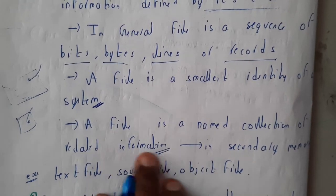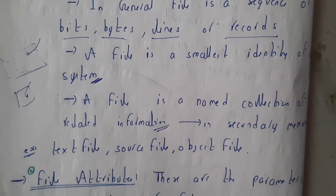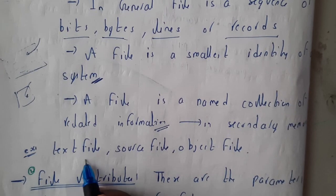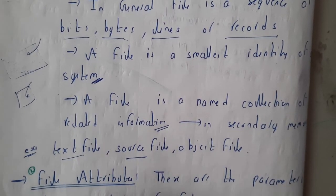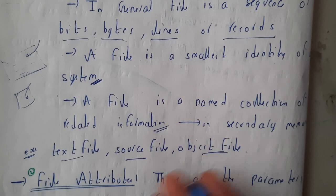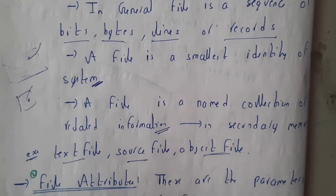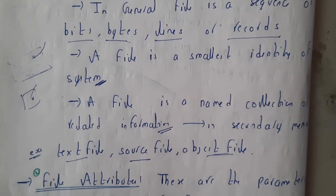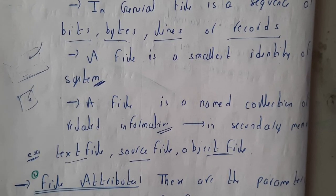The different types of files we use are text files, source files in programming, and object files when you compile programs. I hope everyone got a small basic introduction about files. In the next tutorial, we'll be going through file attributes. Thanks for watching.